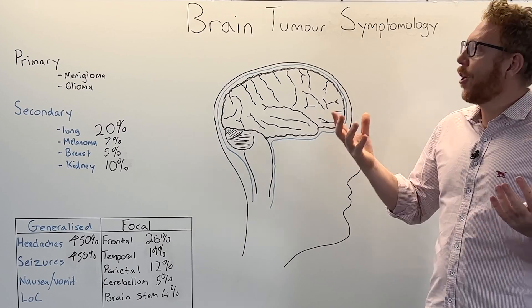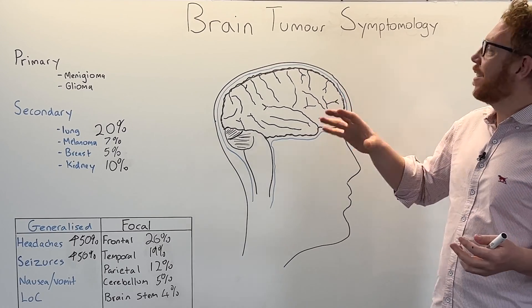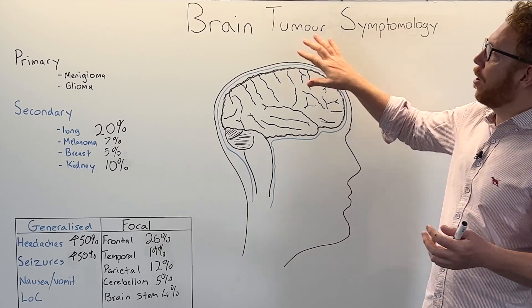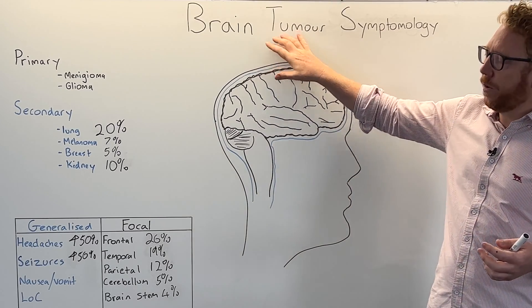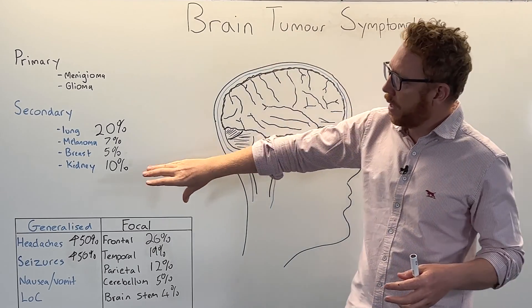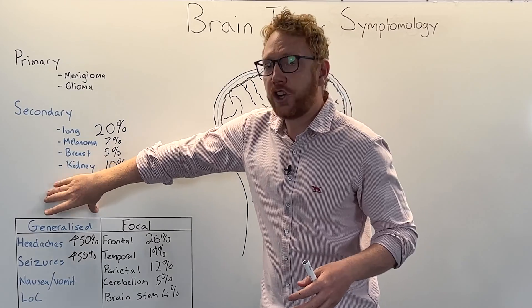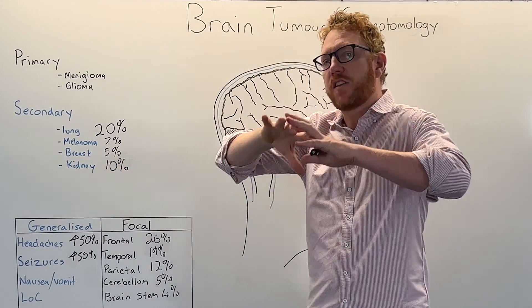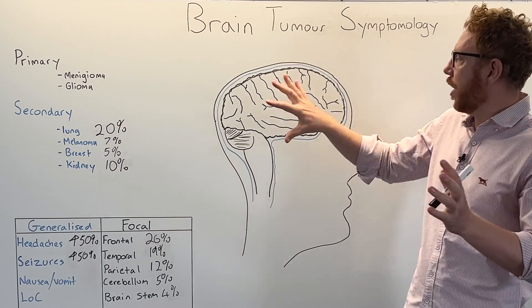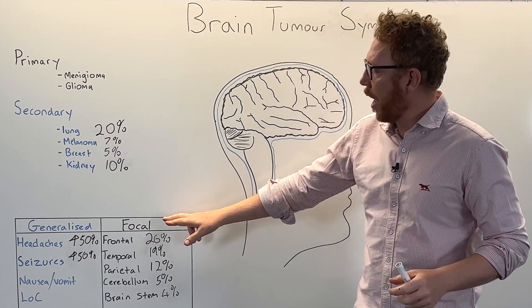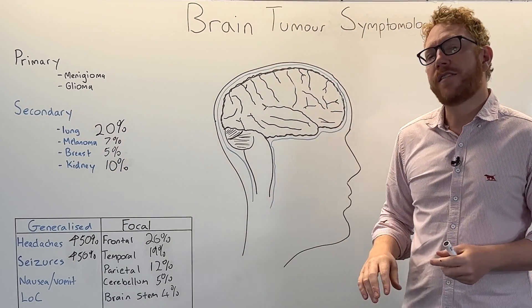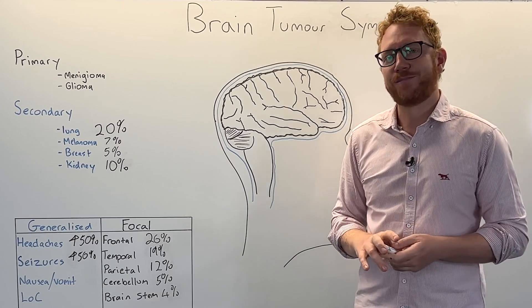So there we have it. Hopefully you now have a better understanding of brain tumour symptomatology. We have generalised effects - global changes to the brain - and more localised effects, which we call focal effects.